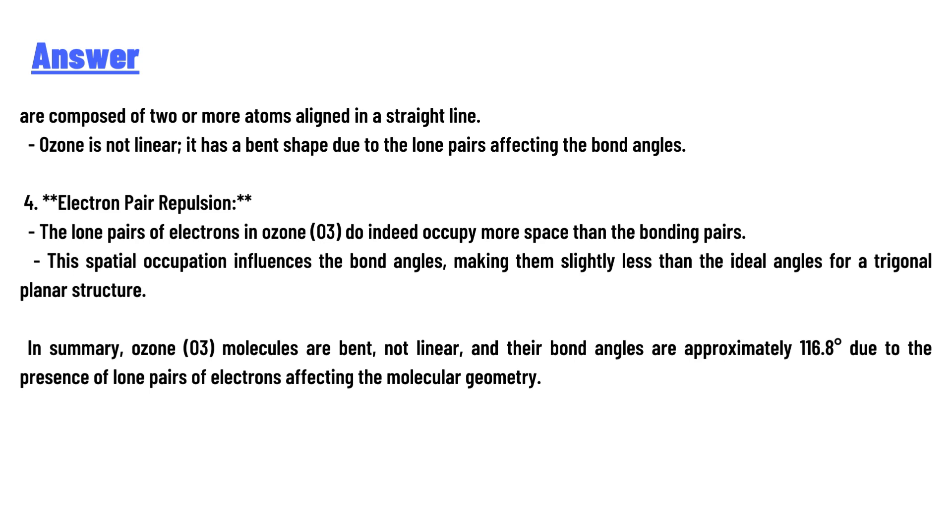lone pairs of electrons in ozone do indeed occupy more space than the bonding pairs. This spatial occupation influences the bond angles, making them slightly less than the ideal angles of a trigonal planar structure. In